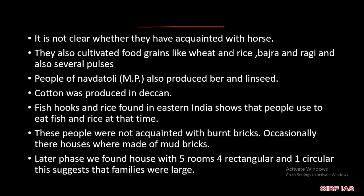साथ ही साथ यह कुछ food grains भी cultivate करते थे। Wheat और rice तो थे ही, बाजरा, रागी, साथ ही साथ कुछ pulses — कुछ दालें भी यहाँ पे। Fish hooks वहाँ मिले हैं — East India की बात करें, Bengal side की — तो वहाँ पे fish hooks मिले हैं, rice देखने को मिला है। इससे लगता है कि Eastern India के लोग fish और rice खाया करते थे।